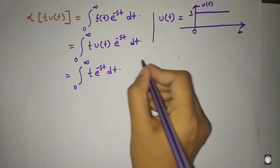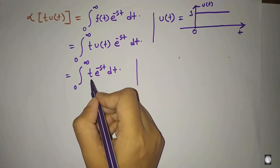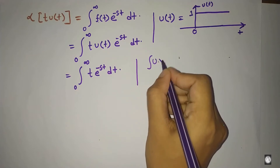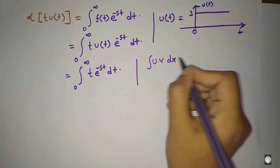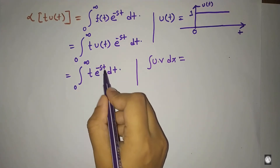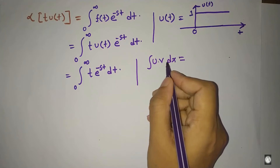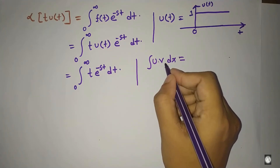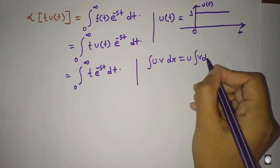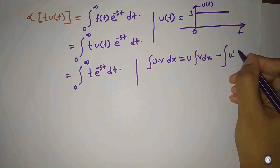We will use the integration by parts method: the integration of u·v dx. The formula is: integration of u·v dx equals u times integration of v dx, minus integration of u-prime times (integration of v dx) dx. We will apply this formula to calculate easily.